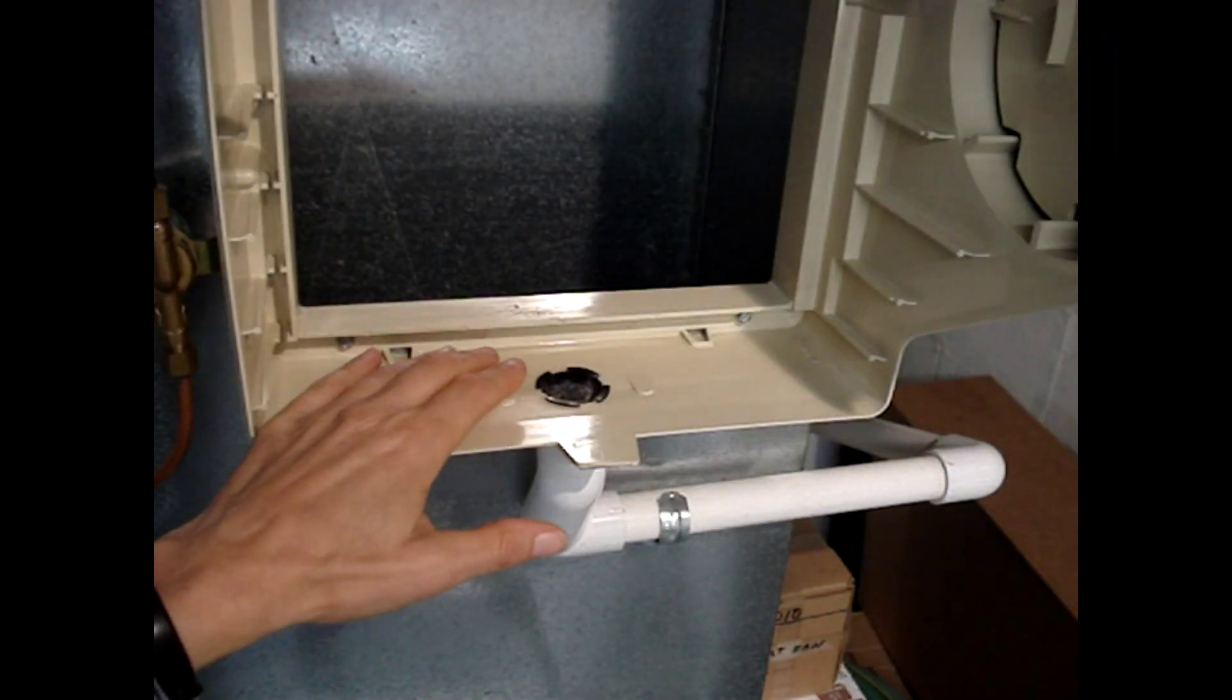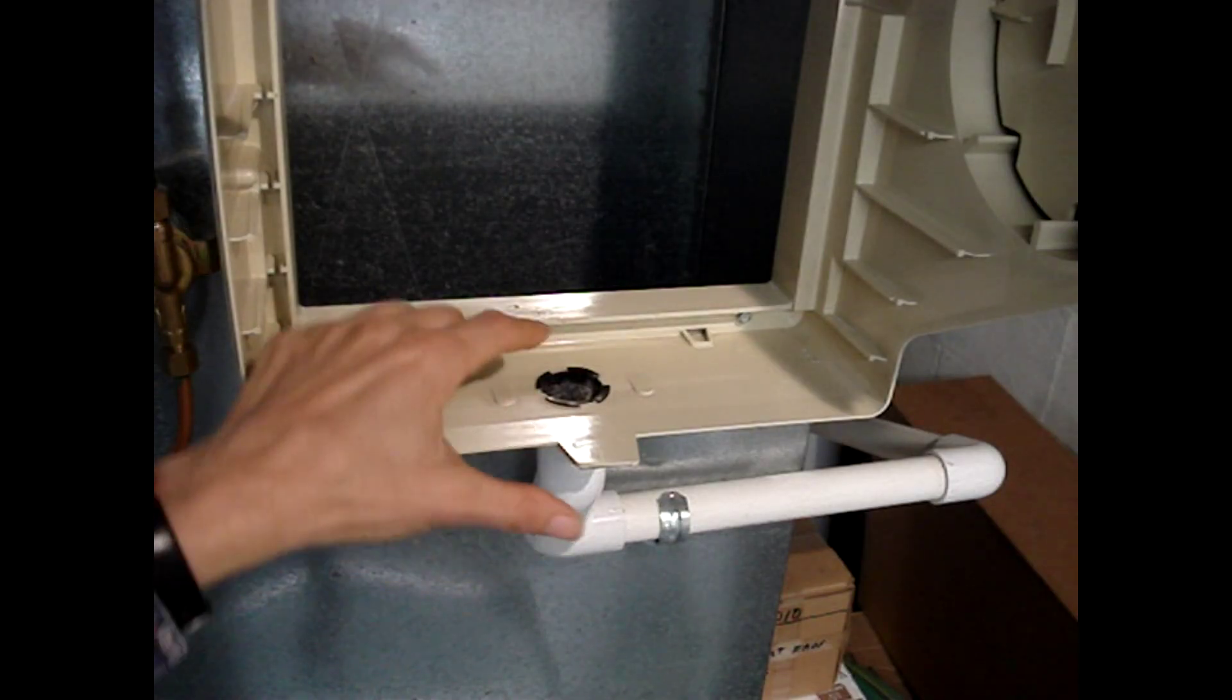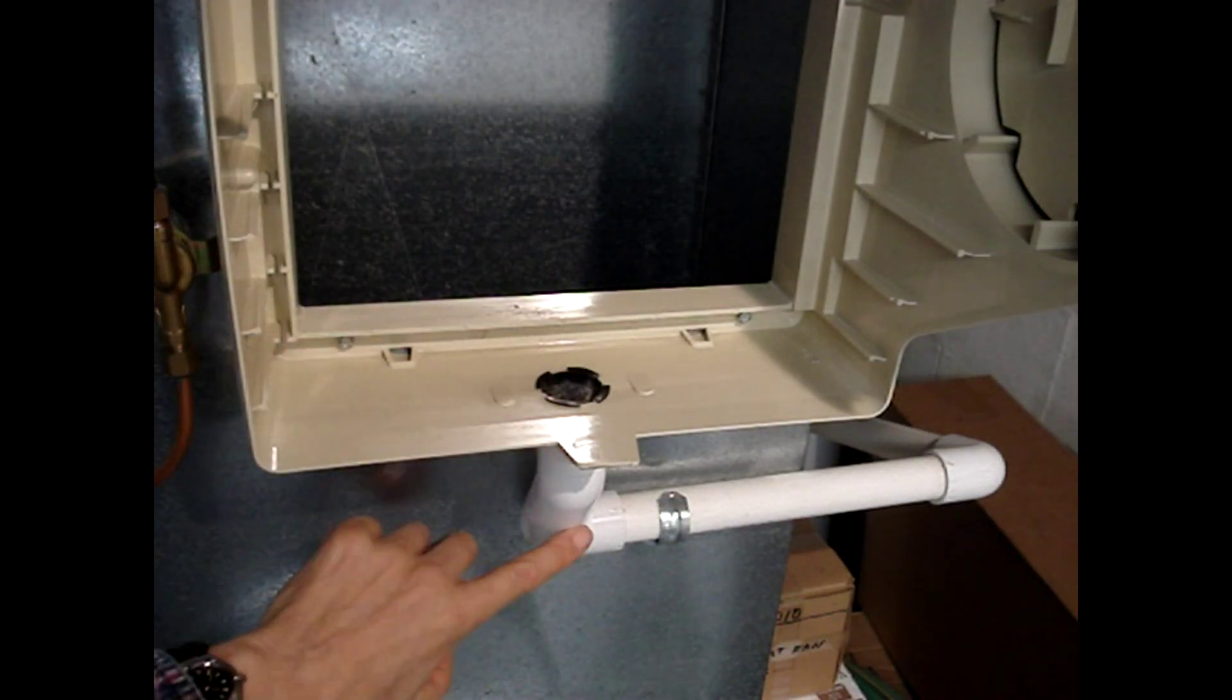Any excess water that doesn't stay on the evaporator panel goes down the drain and through a drain line. The water could go to a nearby floor drain or to a condensate pump.